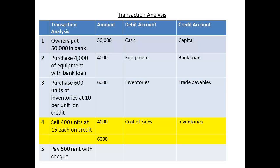Now consider the amount we sold. We received 400 times 15, which is £6,000 for the sale. We debit the asset account of trade receivables to record the money we expect to receive. We credit the revenue account of sales.